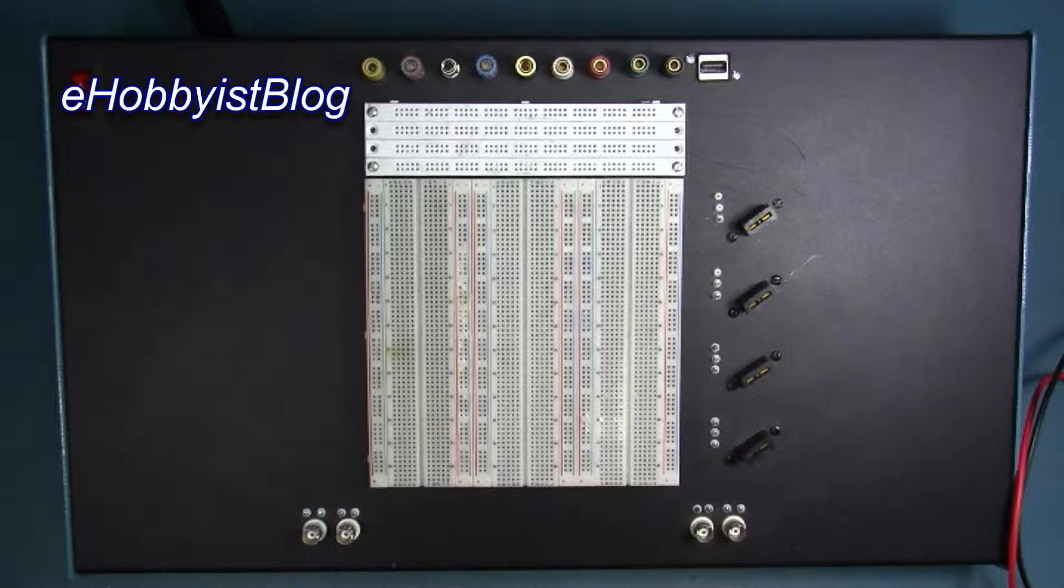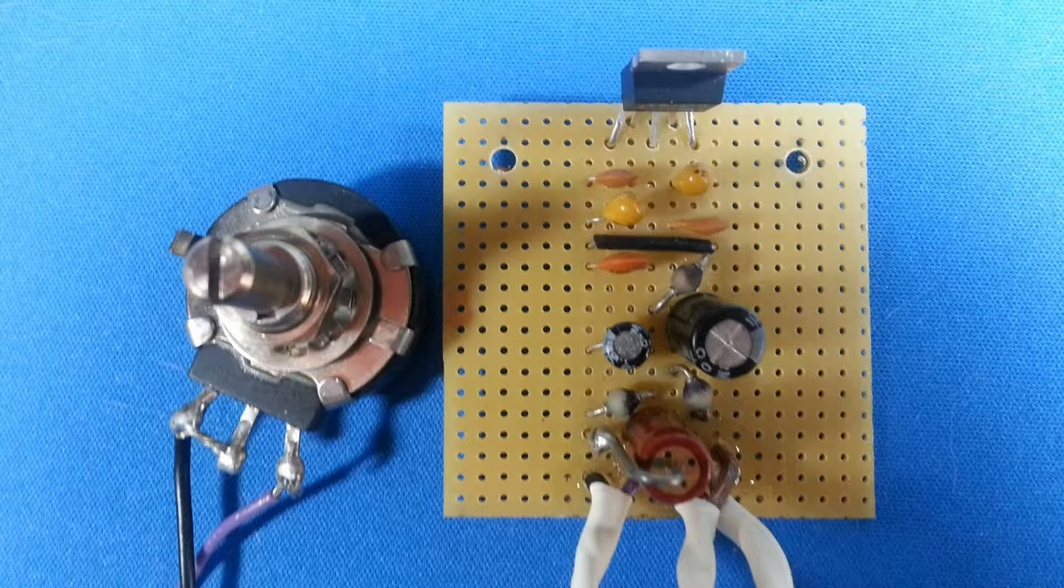We can resume these eHobbyistBlog videos concerning the development of a prototyping system, essentially the development of an electronics lab in a box. When last seen, I was developing a variable positive power supply based on an LT3080 chip and failed miserably. Not only didn't it work, but the perf board was erratic and totally useless.